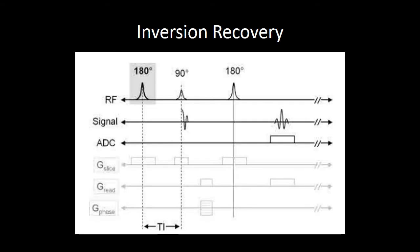Another important modification that we can make to the spin echo sequence is what we call inversion recovery. We're often doing an inversion recovery spin echo sequence to suppress the signal from a certain type of tissue. With STIR, we're doing that to suppress fat, and with FLAIR, we're doing it to suppress CSF. This is a slightly different style sequence diagram, but it nicely demonstrates the inversion recovery structure.